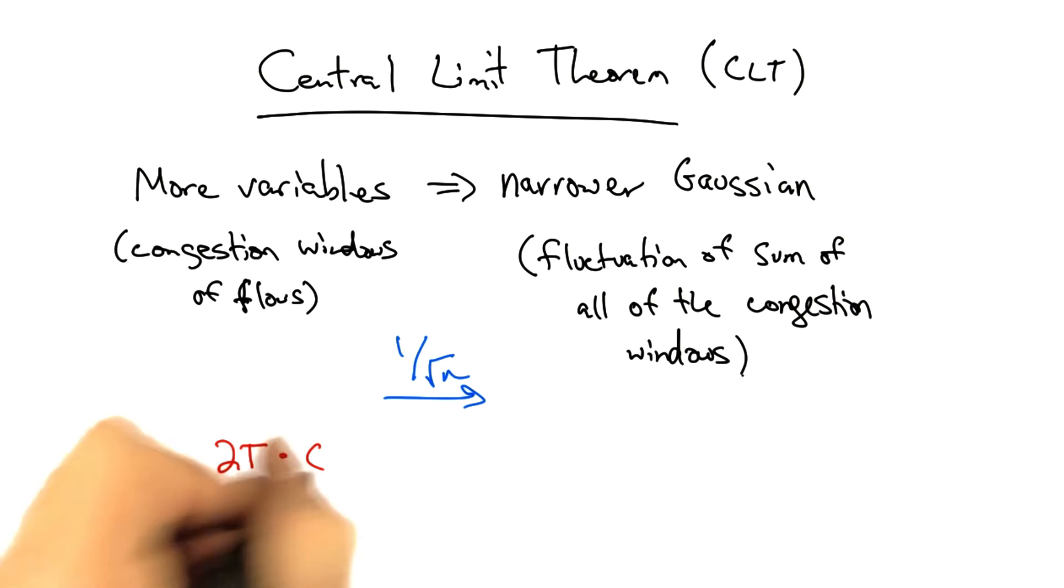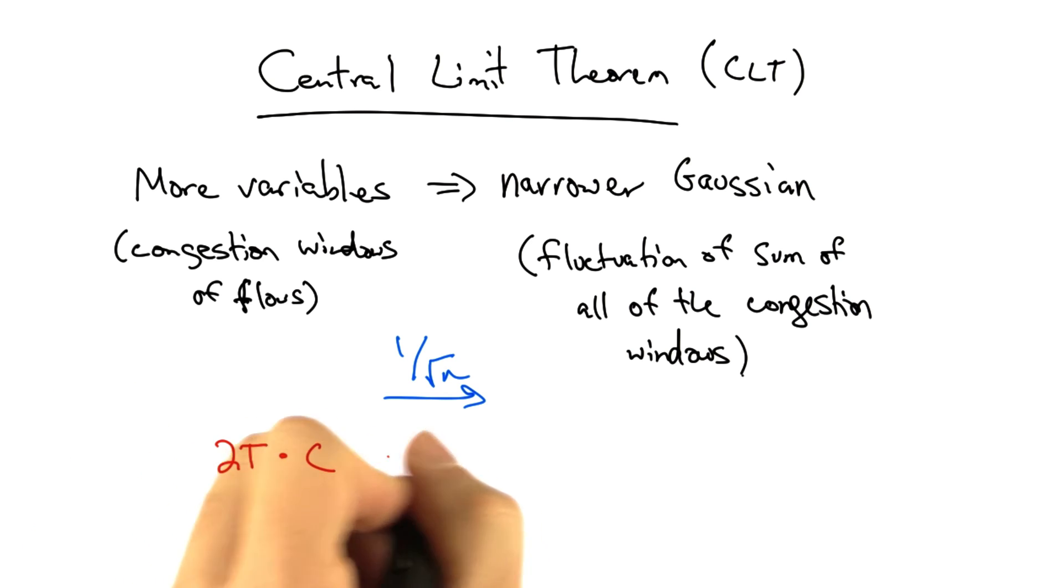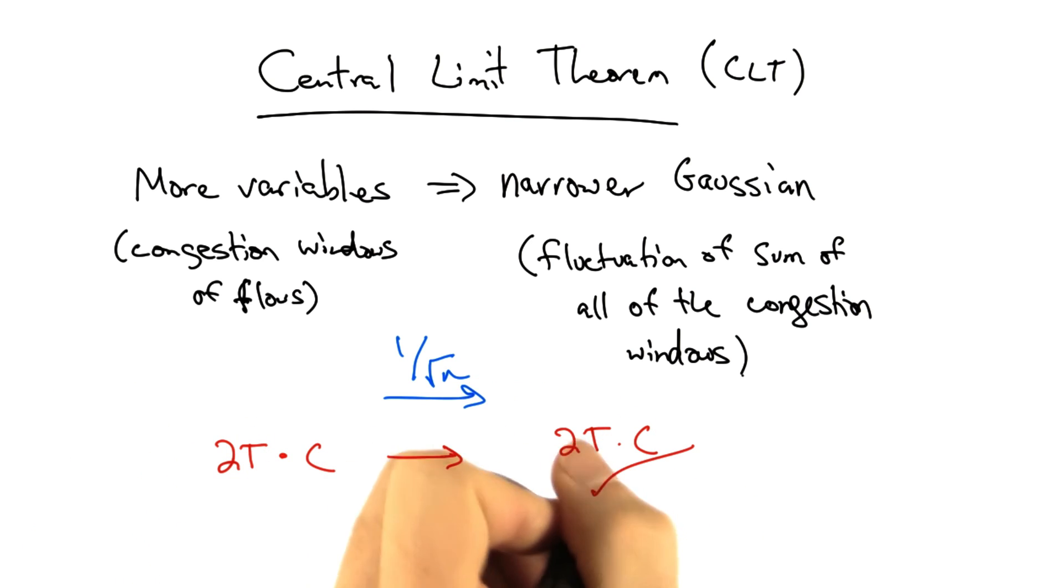And therefore, instead of the required buffering needing to be 2t times c, we can get away with much less buffering, in particular, 2 times c divided by the square root of n, where n is the number of flows passing through the router.